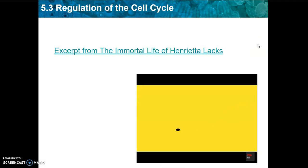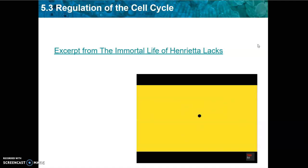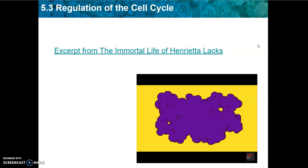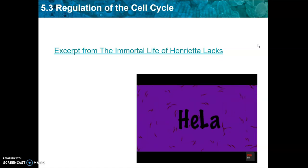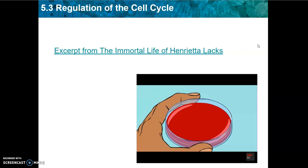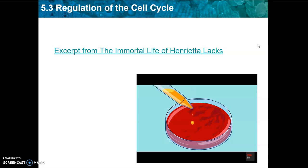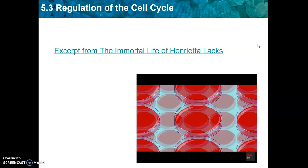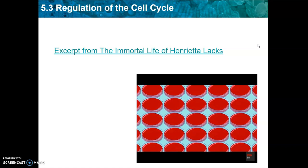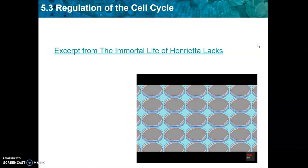Imagine something small enough to float on a particle of dust that holds the keys to understanding cancer, virology, and genetics. Such a thing exists in the form of trillions upon trillions of human lab-grown cells called HeLa. Scientists grow human cells in the lab to study how they function, understand how diseases develop, and test new treatments without engaging patients. To repeat experiments and compare results, they need huge populations of identical cells that can duplicate themselves faithfully for years. But until 1951, all human cell lines that researchers tried to grow had died after a few days.